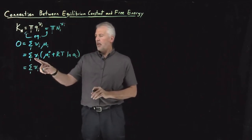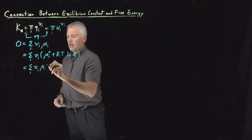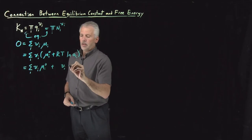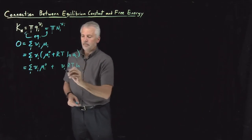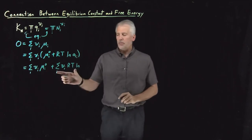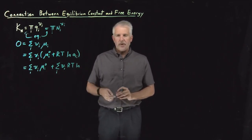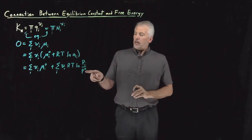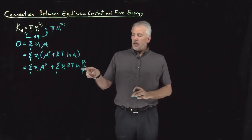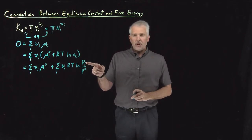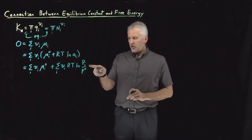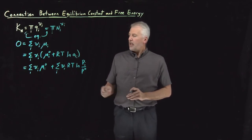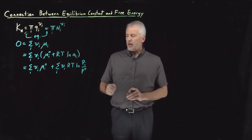Let's break this up into two separate sums: a sum of ν times μ° plus a sum of ν times RT times the natural log of activity. Replacing activity with P/P° for an ideal gas, we have two sums. This is true for gas phase reactions under relatively low pressure conditions, and this is the form that will tell us something about equilibrium constants.